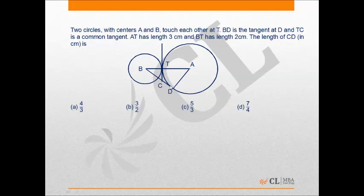If we look at the figure, we see that BD is a tangent to the circle with center A. Therefore, angle BDA would be 90 degrees. Similarly, CT is a tangent to both the circles. Therefore, angle CTB would be 90 and also angle CTA would be 90.